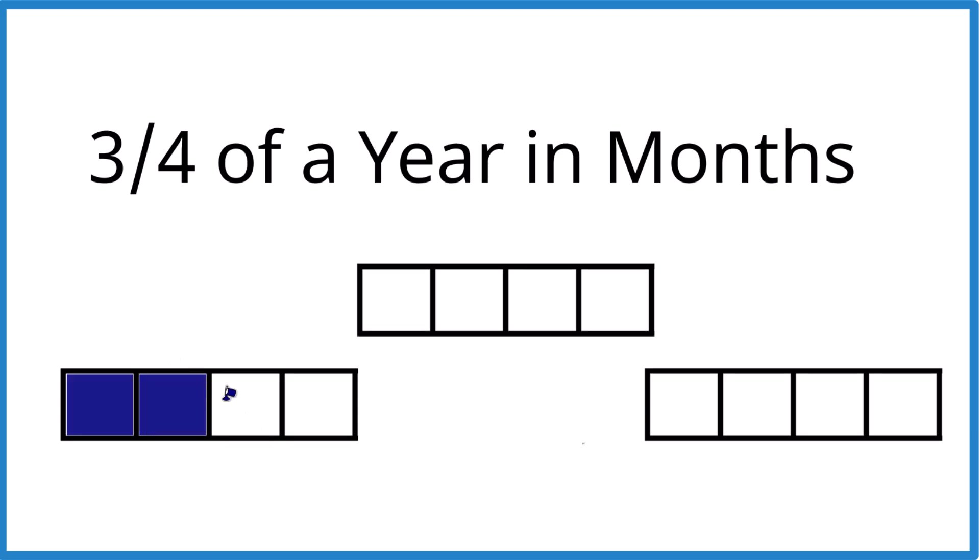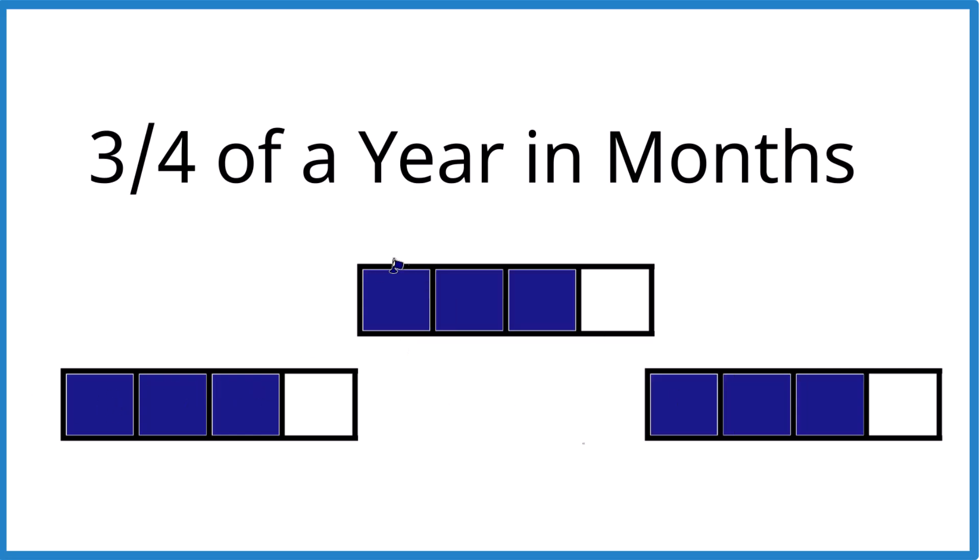we get one, two, three, one, two, three, one, two, three. And if you add up the blue blocks here, you'll get nine. So three-fourths of a year, that's nine months. You can see it kind of clearly here.